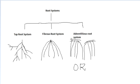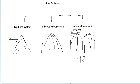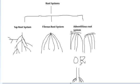Another example is the plant pandanus, or a common example like sugarcane. If there is a branch and roots develop from the node to give support to the branch, these roots can hold the branch. These are known as stilt roots, and this is also a type of adventitious root system.